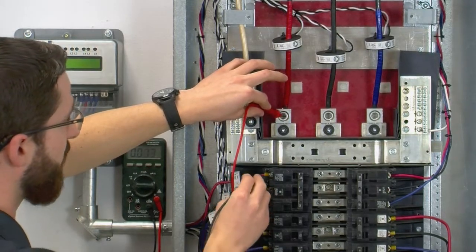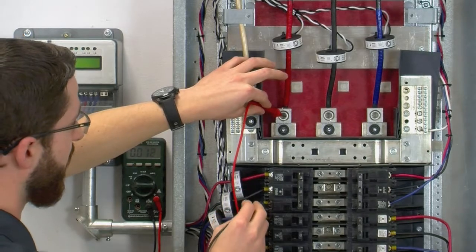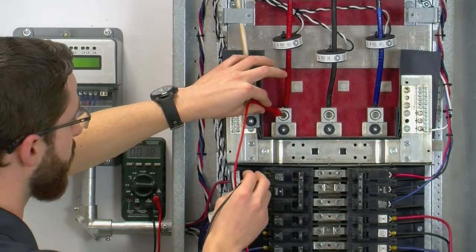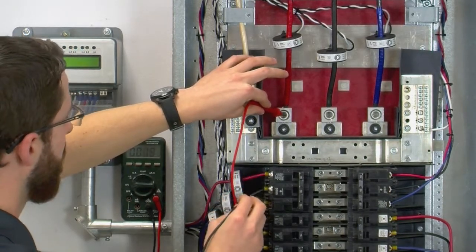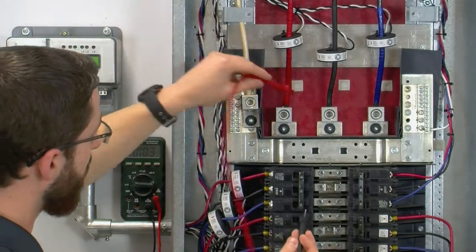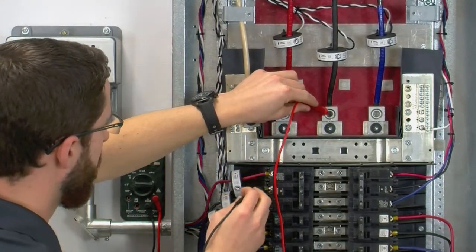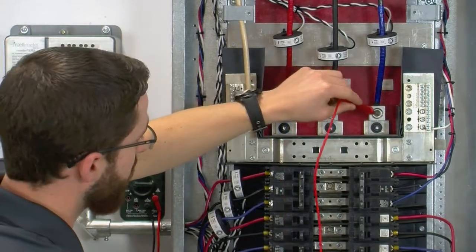If it was any other phase, you would have a voltage difference. With a panel like this, it would be roughly 240 volts difference, line to line. You're going to repeat the process once again for phase B and phase C.